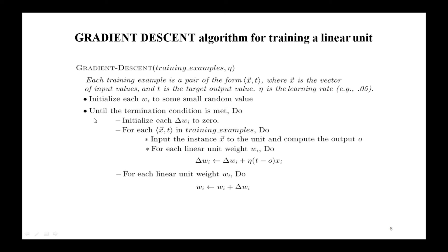First, initialize each w-i to some small random value. Then continue the following steps until the termination condition is met: initialize each delta w-i to zero; then for each (x-vector, t) in the training examples, input the instance x-vector to the unit and compute the output o; then for each linear unit weight w-i, perform delta w-i equals delta w-i plus eta times (t minus o) times x-i.